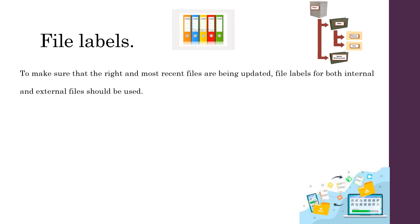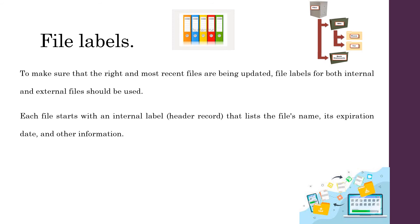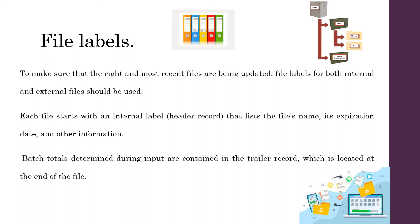File labels ensure that the right and most recent files are being updated. File labels for both internal and external files should be used. Each file starts with an internal label listing the file name, its expiration date, and other information. Batch totals determined during input are contained in the trailer record, which is located at the end of the file.